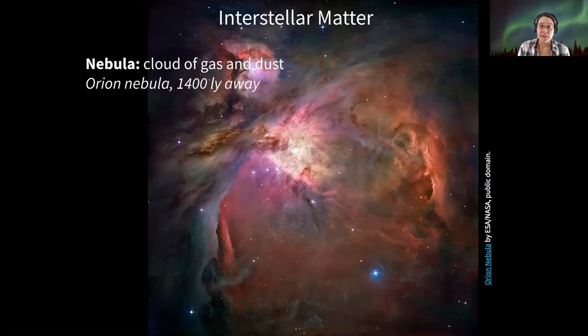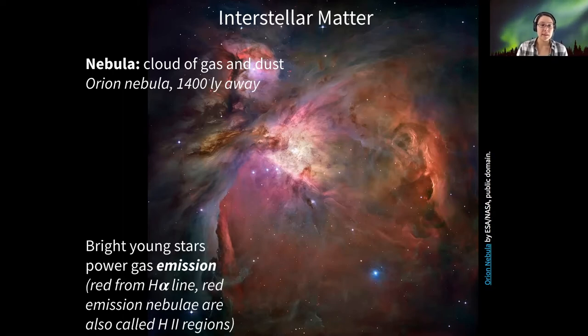So this one in particular is the Orion Nebula. It's about 1,400 light years away from the sun. And a characteristic of this nebula in particular is that it contains bright young stars. And this is because the nebula is actually the birthplace of stars.